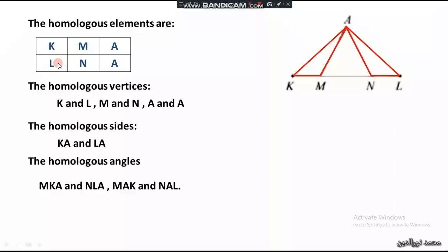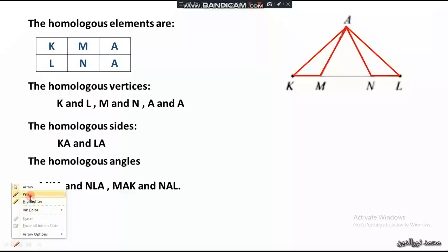The homologous angles: vertex A corresponds to vertex A; vertex M corresponds to vertex N; angle MKA corresponds to angle NLA; and angle MAK corresponds to angle NAL. We put the hat symbol over the angles to denote them properly.